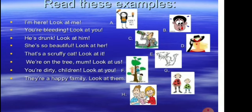Now you can make a pause and write down in your copybook, in a table, the subject pronoun on the left side and the object pronoun on the right side. I'll do the first two with you. 'I am here' — the subject pronoun is I, because I am speaking about myself. 'Look at me' — yes, 'me' is the object pronoun.